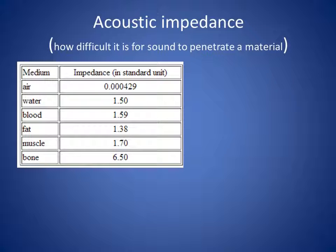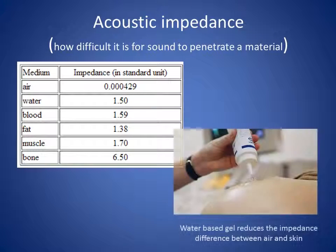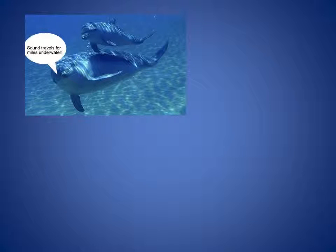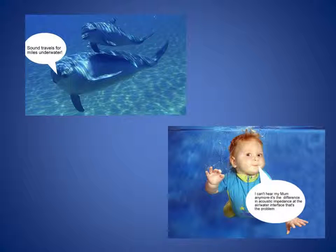Air and water have very different impedances, so a beam of ultrasound hitting a water surface is almost entirely reflected away and only a small amount enters the water. Because of the impedance difference between air and skin, a water-based gel is used to act as a coupling medium and help match the impedances. To illustrate the concept further, consider that marine mammals can communicate over long distances through water when no interface is present. However, a submerged swimmer is largely isolated from noises above the water surface due to reflection of sound at the air-water interface.